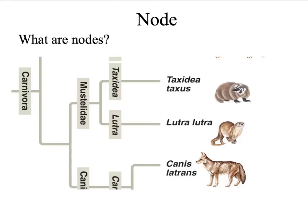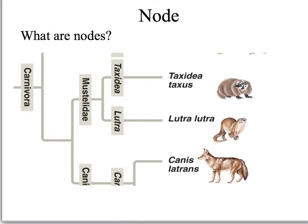A node on the tree indicates where the branches meet. They represent the common shared ancestor of all types. In this example, a node represented in the circle indicates a common ancestor for the Taxidea taxus and the Lutra lutra.